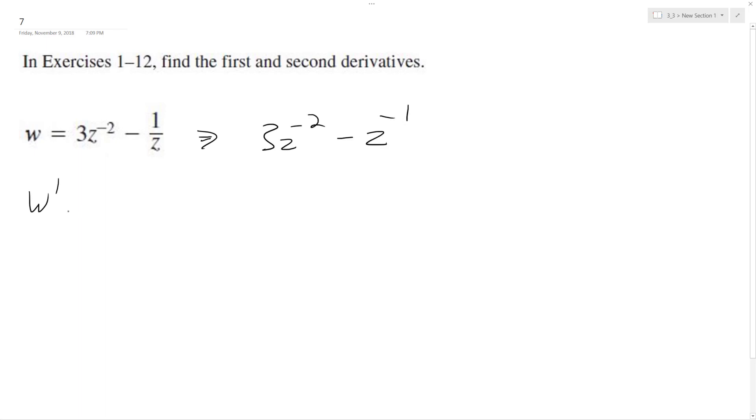So w prime is going to be equal to, pull down the exponent, negative 2, and then this becomes z raised to the negative 3 minus negative 1 z raised to the negative 2, and we end up with negative 6z raised to the negative 3 plus z raised to the negative 2.